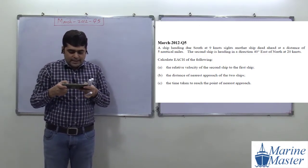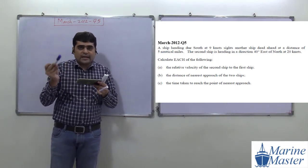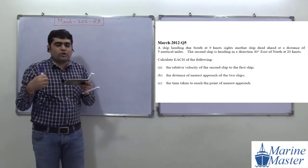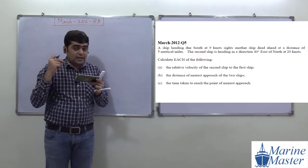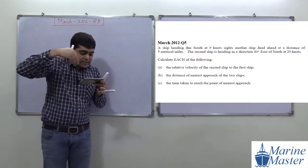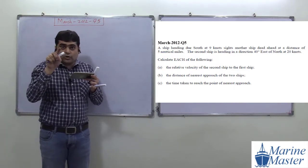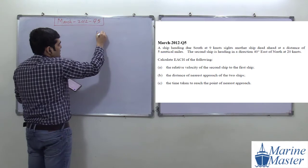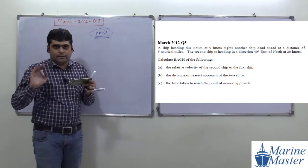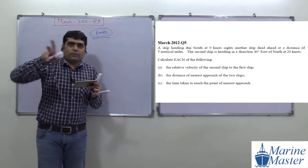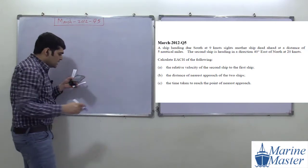A ship is heading due south at nine knots. 'Due south' means it is going in the south direction at nine knots. Knots is a unit of speed, and nautical mile is a unit of distance — it's important to keep these distinct.